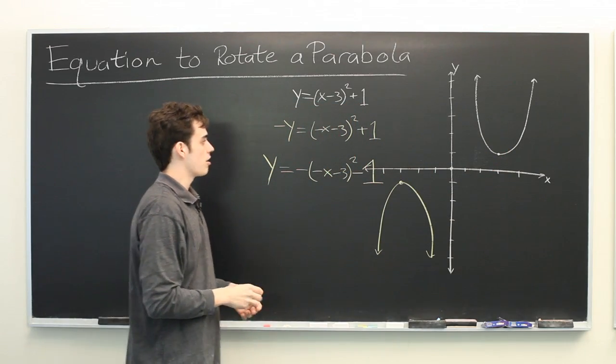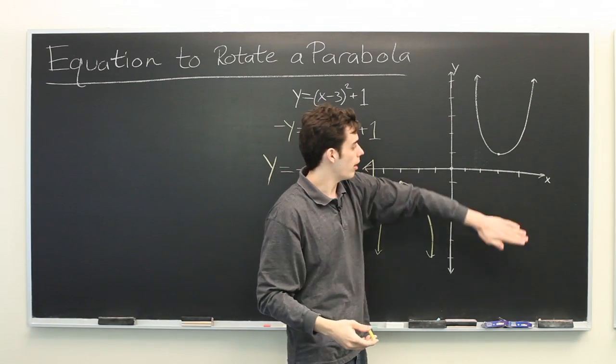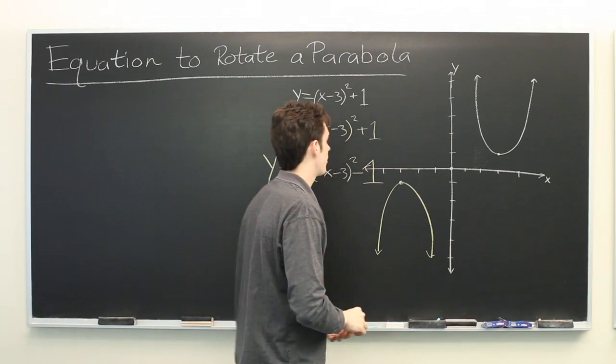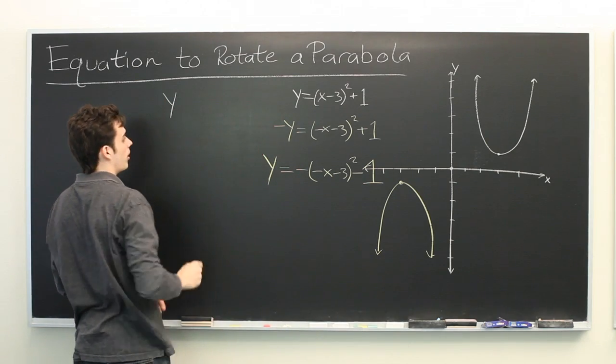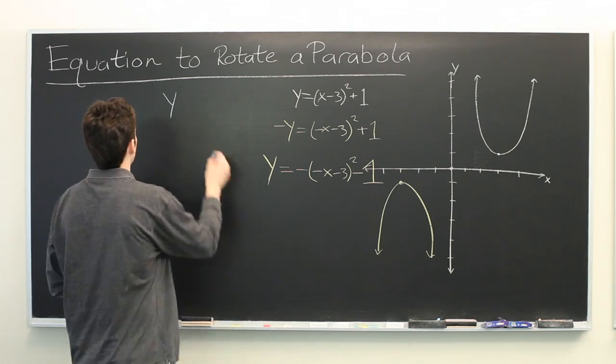And a similar process can be used to simply flip it over the x-axis. We simply replace all instances of y with negative y.